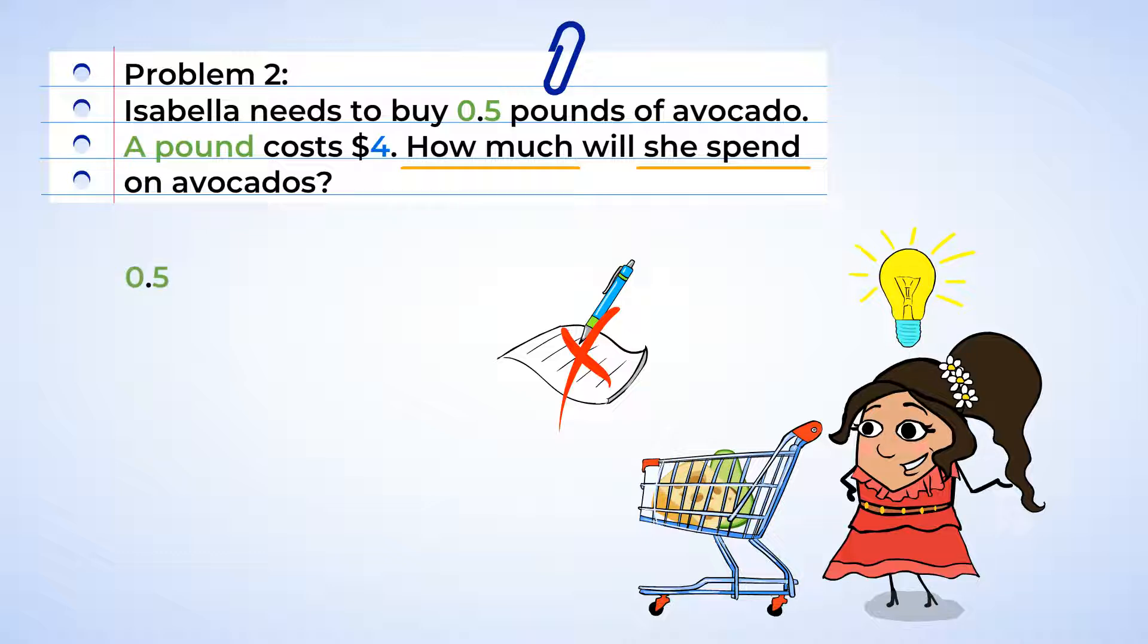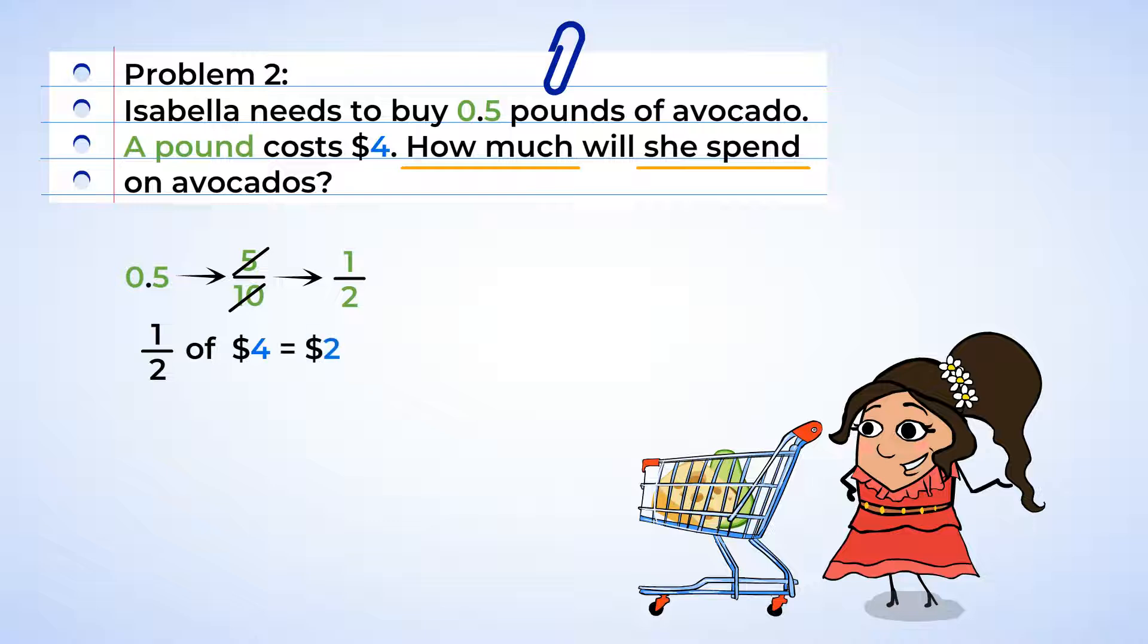Now we need 0.5 pounds of avocado. And we can turn 0.5 into the fraction 5 tenths. Or we could also say that we need 5 tenths pounds of avocado. And this can be simplified to one half. So we're actually looking for half a pound of avocados. Half of 4 is 2. Cool, here we go. Isabella will spend $2 on avocados. Wow!